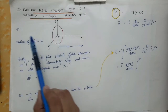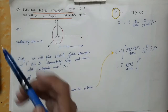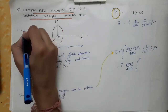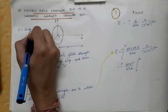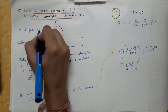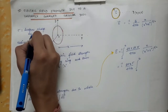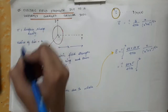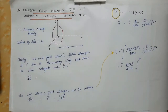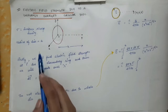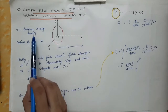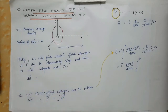This whole circular disk will be uniformly charged, meaning charge will be distributed uniformly on the surface. We will be considering sigma, which is the surface charge density — that is, the total charge divided by the total area on which that charge is distributed. This gives us the charge per unit area, which is sigma.